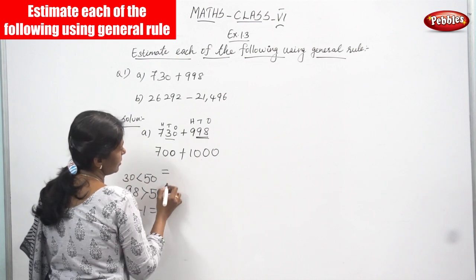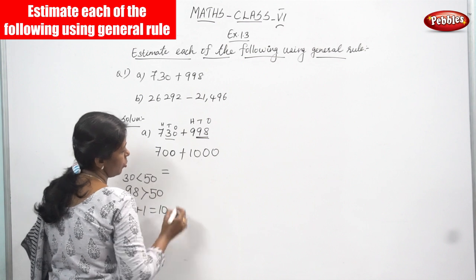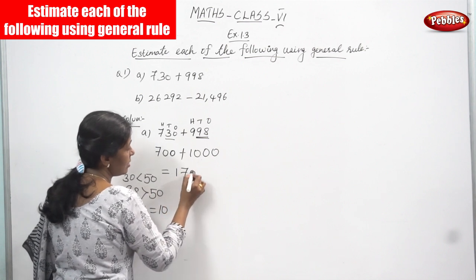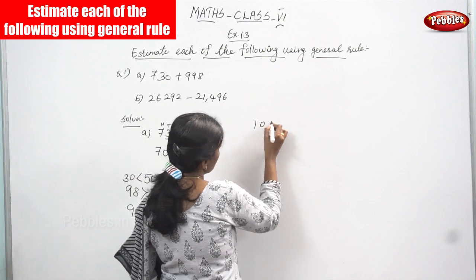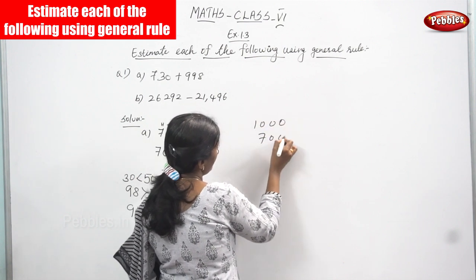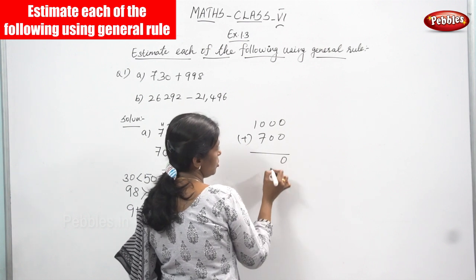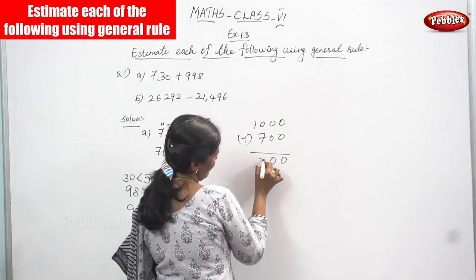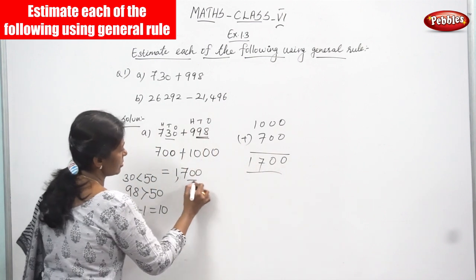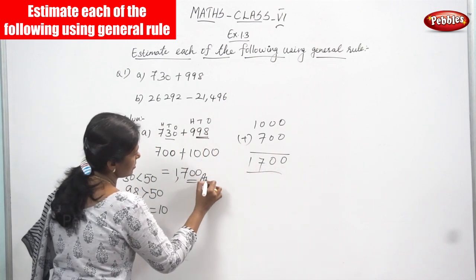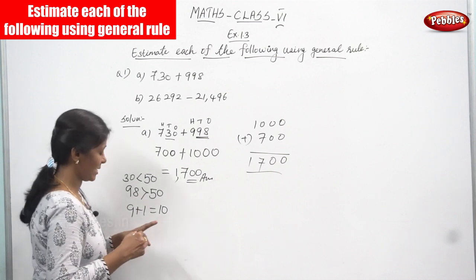Now we are going to add together: 700 plus 1000. So 1000 plus 700 gives us 1700. If you want to verify: 0 plus 0 is 0, 0 plus 0 is 0, 0 plus 7 is 7, and 1. So the answer is 1700. This is the right answer for the question.